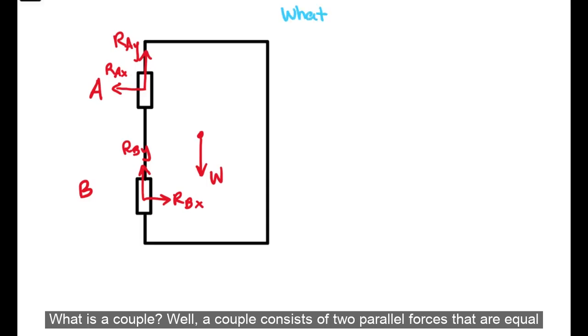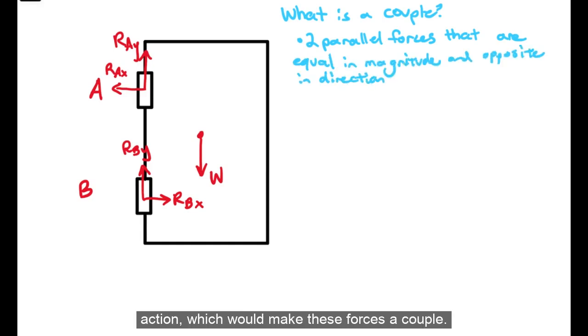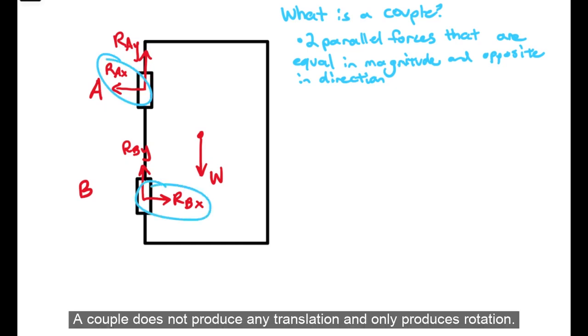What is a couple? Well, a couple consists of two parallel forces that are equal in magnitude, opposite in direction, and do not share a line of action, which would make these forces a couple. A couple does not produce any translation and only produces rotation.